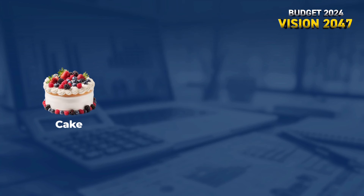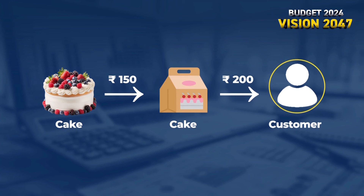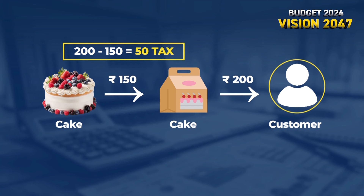For example, if a baker sells his cake for Rs. 150 and a shopkeeper sells it for Rs. 200, the shopkeeper will pay a tax only on the Rs. 50. In the old tax regime, the shopkeeper would have to pay tax on the entire Rs. 200, making the cake way more expensive for us.